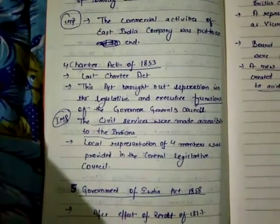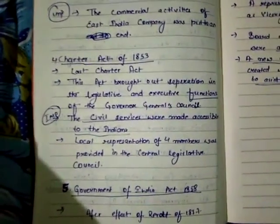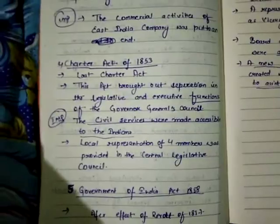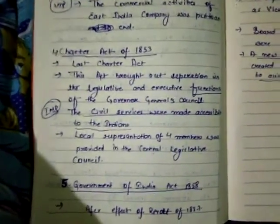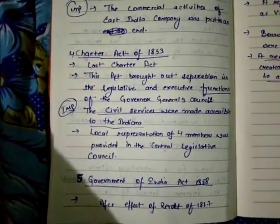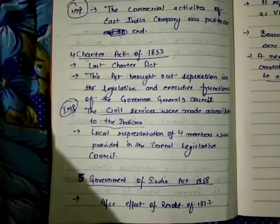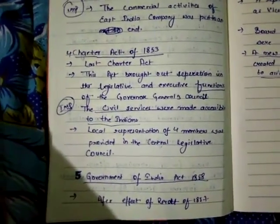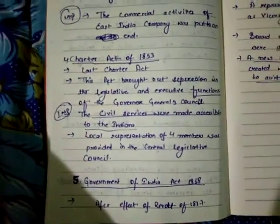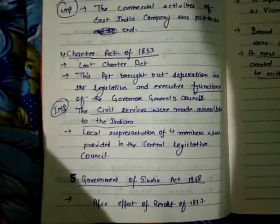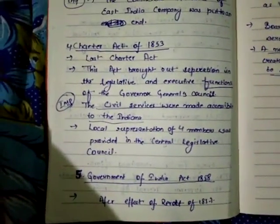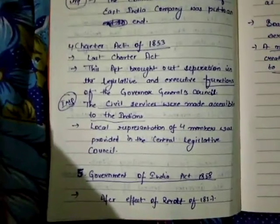After that, a new act known as the Government of India Act was launched just five years later in 1858. As you may know, there was a revolt in 1857, known as the first ever communal effort against the British, and this act was an after-effect of that revolt.